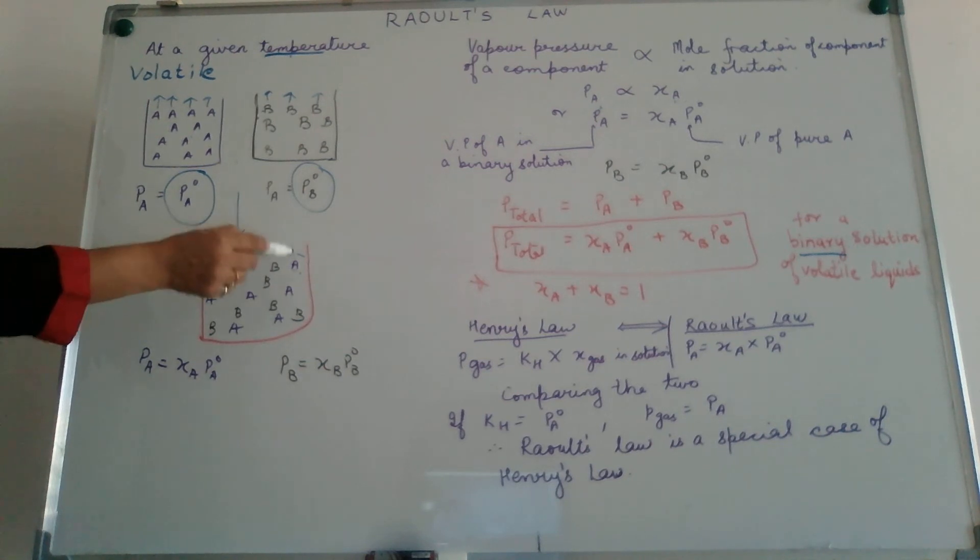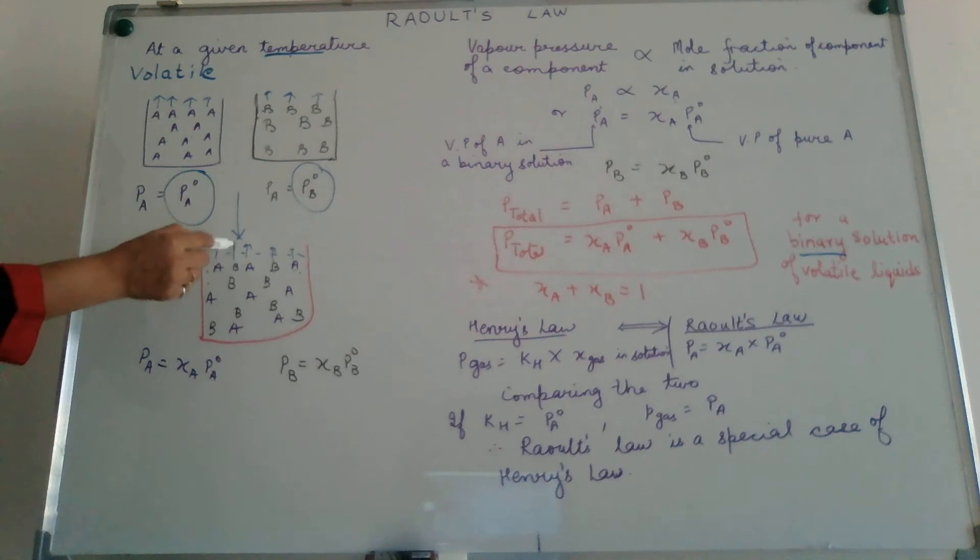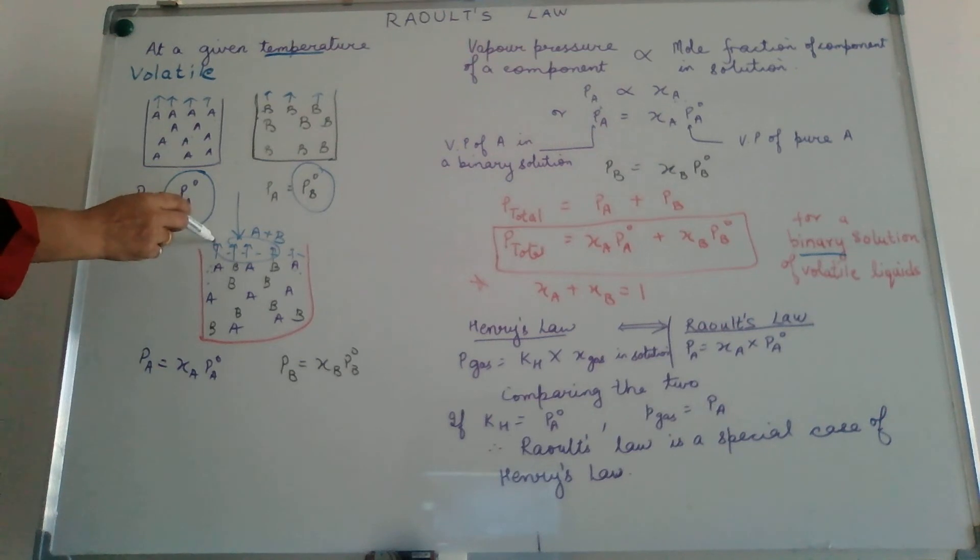So we will have particles of A escaping from here. Particles of B as well are escaping. In other words, it is not that all five particles of A are vaporizing. In the vapor state we have particles of A and B. So the vapor pressure in this case will be due to the particles of A and due to the particles of B, but not all five particles of A, only three. So we say the vapor pressure of A in this solution is equal to the mole fraction of A in the solution into the vapor pressure of pure A. In other words, how much fraction of the solution is A? That decides its vapor pressure in a mixture of two liquids.